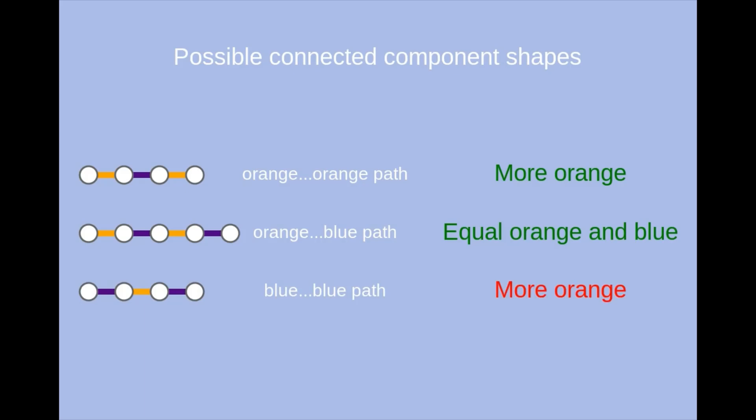Now there are three types of alternating paths, one where both endpoints are matched in the orange graph, one where the endpoints are opposite, and one where both endpoints are matched in the blue graph. But notice that the only one which is capable of causing there to be more blue edges than orange edges is the last one.